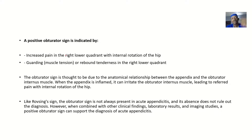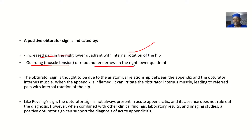If the obturator sign or Coups sign is positive, it is indicated by increased pain in the right lower quadrant with internal rotation of the hip. There may also be guarding — muscle tension — or rebound tenderness in the lower quadrant. A positive sign is associated with appendicitis. If you're unsure, you can still perform other tests to confirm the diagnosis.